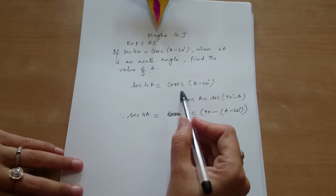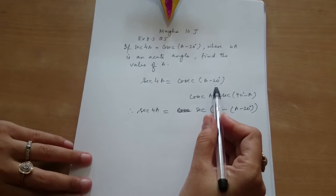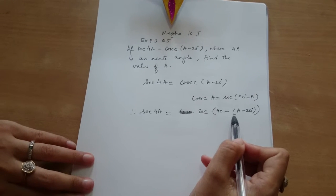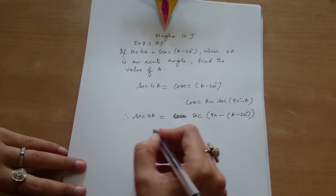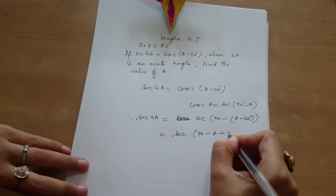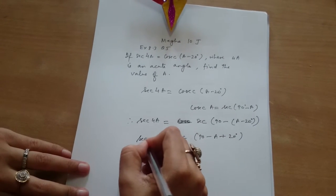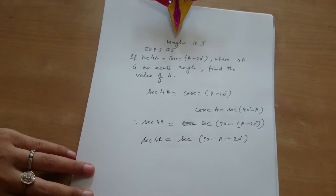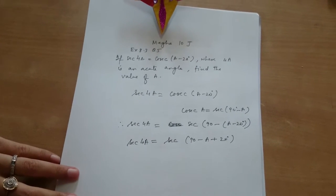So we have replaced cosecant a minus 20 degrees by secant 90 minus a minus 20 degrees. This is equal to secant 90 minus a plus 20 degrees. So we have secant 4a is equal to secant 90 minus a plus 20 degrees.